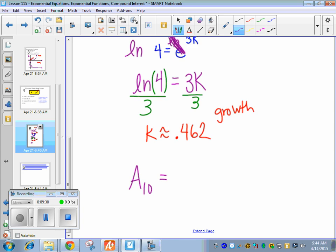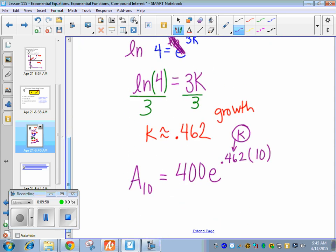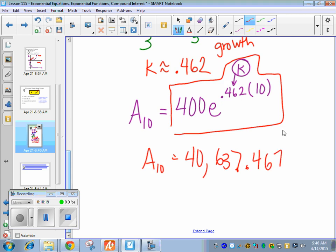And now we go back to what we know and answer the question. How many rabbits would there be at the end of 10 years? So, a sub 10. So instead of a sub t, I want to know what's the answer after 10 years. We have the same initial amount. We still started with 400 rabbits. Now we finally know k. So instead of 0.462, you guys stored this in your calculator as k. So you're going to use that. And then we're going to plug in the time, which now is 10 years. You can plug this whole thing in to your calculator. 400 times e to the k times... So after 10 years, there are 40,637.